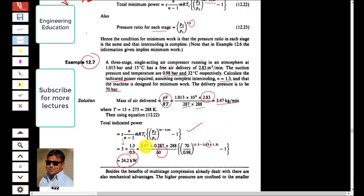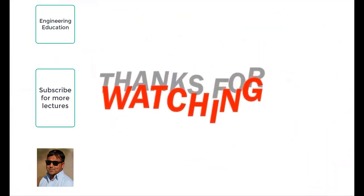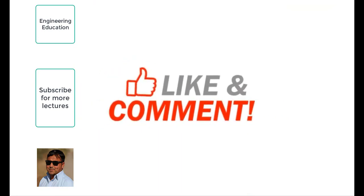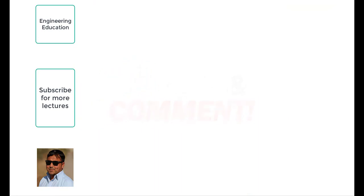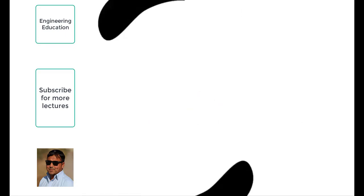This is all about multi-stage compression and intermediate pressure — how to find the total minimum indicated power for multiple stages. Thanks for watching. Please like, comment, and subscribe to my channel to get new videos.